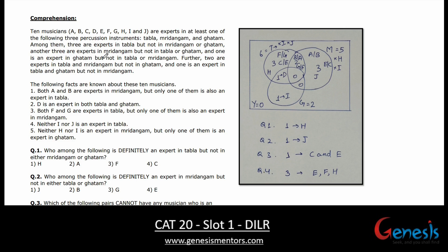Among them, three sets are given. Some facts are also given and if we see the complete set, no other instrument or set is available. So we will make a diagram of three sets: Tabla for T, Mridangam for M, and Ghatam for G. Total there are 10, so the universal set U equals 10.